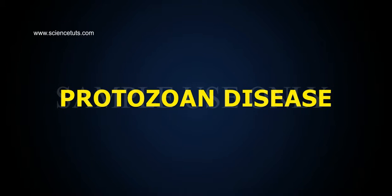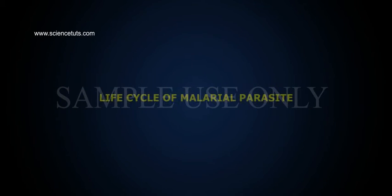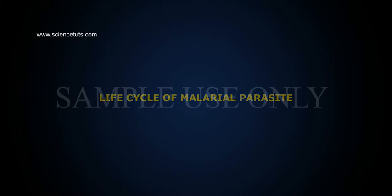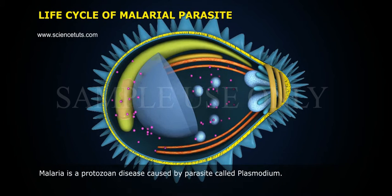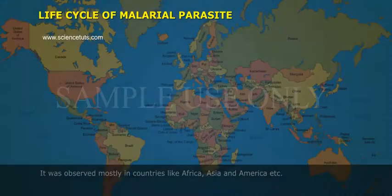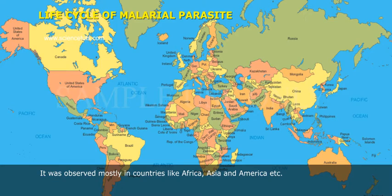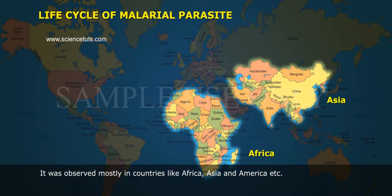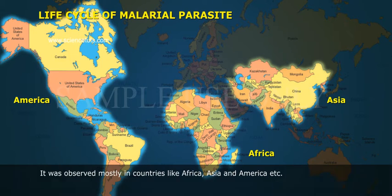Protozoan Disease: Life cycle of malarial parasite. Malaria is a protozoan disease caused by a parasite called Plasmodium. It was observed mostly in countries like Africa, Asia and America, etc.